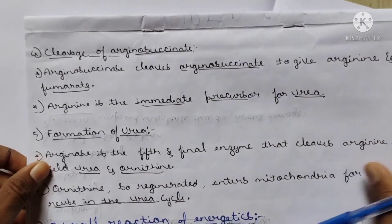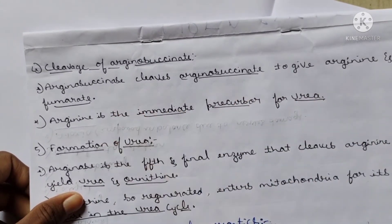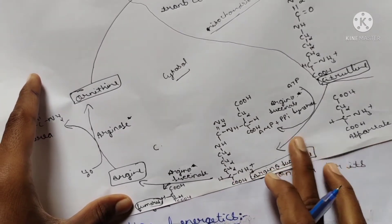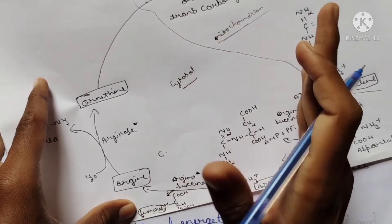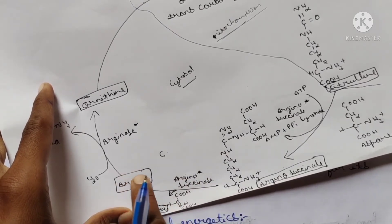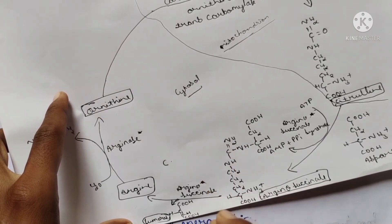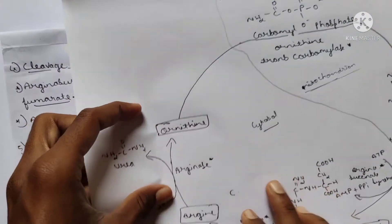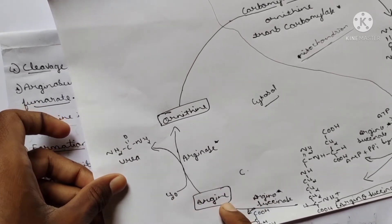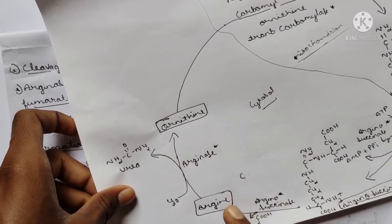The fourth step is the cleavage of arginosuccinate. The enzyme arginosuccinase cleaves arginosuccinate to give two products: arginine and fumarate. Arginine is the immediate precursor for urea - after the preparation of arginine, it immediately forms urea with the help of the enzyme arginase.